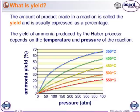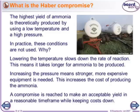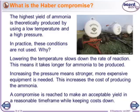The highest yield of ammonia is theoretically produced by using a low temperature and a high pressure. But they don't actually use these theoretically perfect values. Lowering the temperature slows down the rate of reaction — at low temperatures, particles move more slowly and don't collide with enough kinetic energy to react. It would take too long for ammonia to be made if it's too cold, even though the yield would be high.